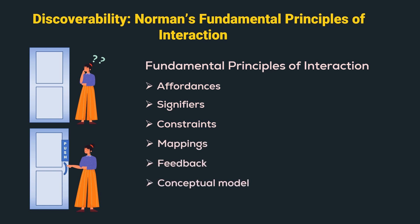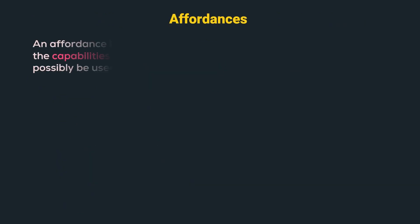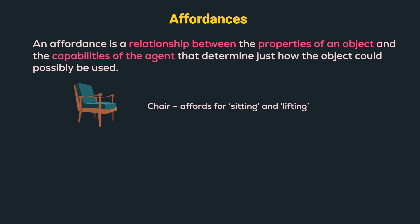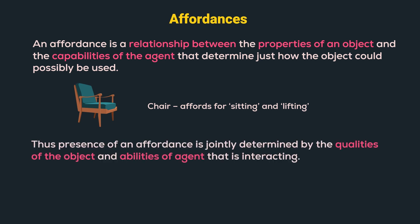Let us understand them one by one. An affordance is a relationship between the properties of an object and the capabilities of the agent that determine just how the object could possibly be used. For example, a chair affords sitting, but a chair can also be lifted by a single person. Hence, it also affords lifting for a person who is strong enough to lift the chair. Thus, the presence of an affordance is jointly determined by the qualities of the object and the abilities of the agent that is interacting.